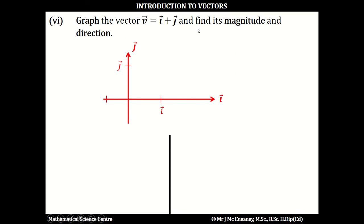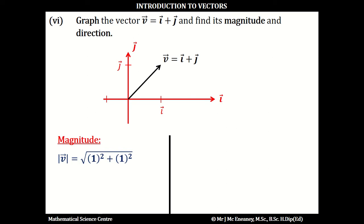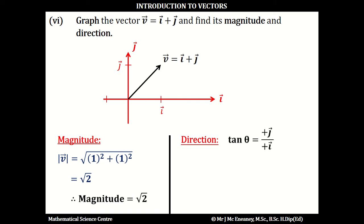In part 6, if we want to graph the vector v, which is i plus j, so we move across to 1i and then up to 1j. There is a 1 in front of the i and there is a 1 in front of the j. Using Pythagoras' theorem, the magnitude of v is going to be the square root of 1 squared plus 1 squared, so the magnitude of v is the square root of 2. To get the angle theta, the tan of theta is the positive j over the positive i, so the tan of theta will be 1 over 1, which means the angle theta is 45 degrees. A positive i means east, a positive j means north, so the direction is northeast.